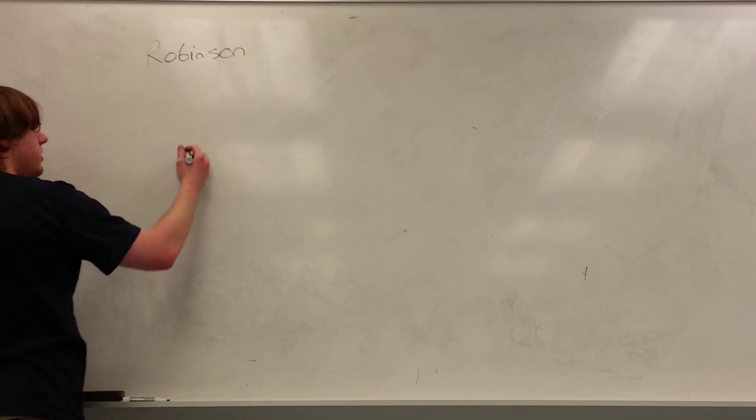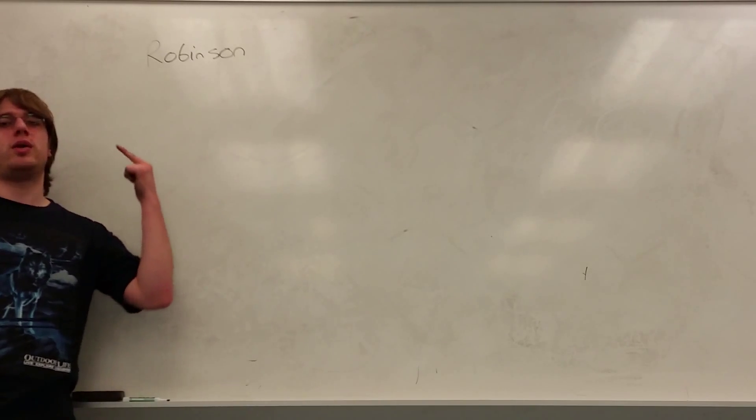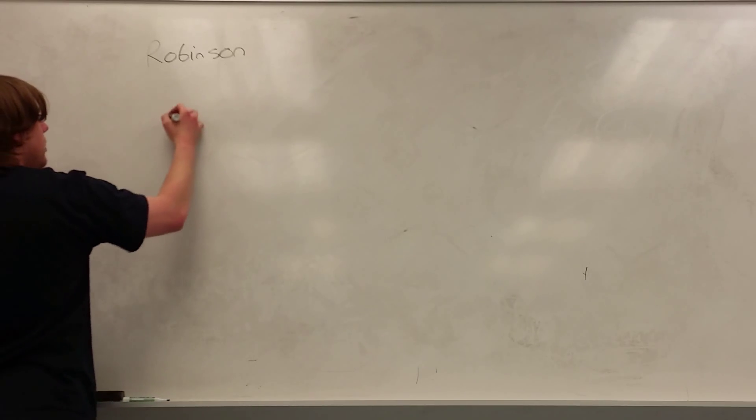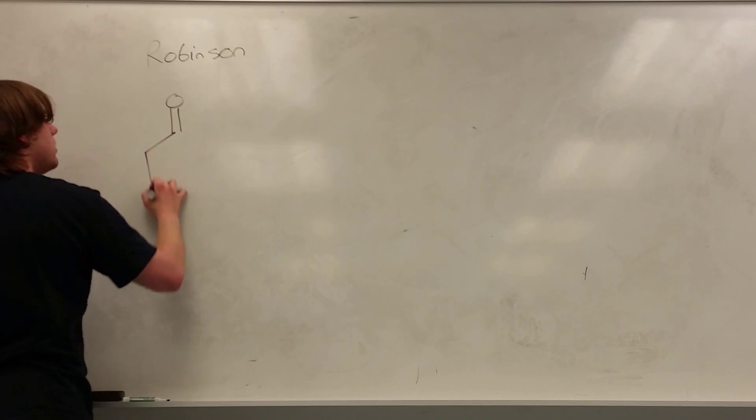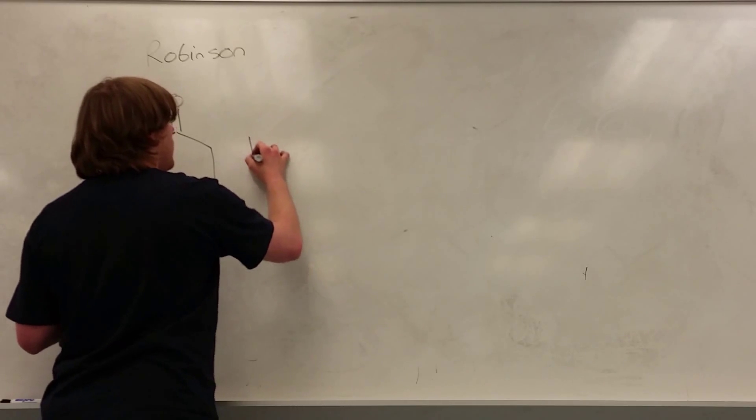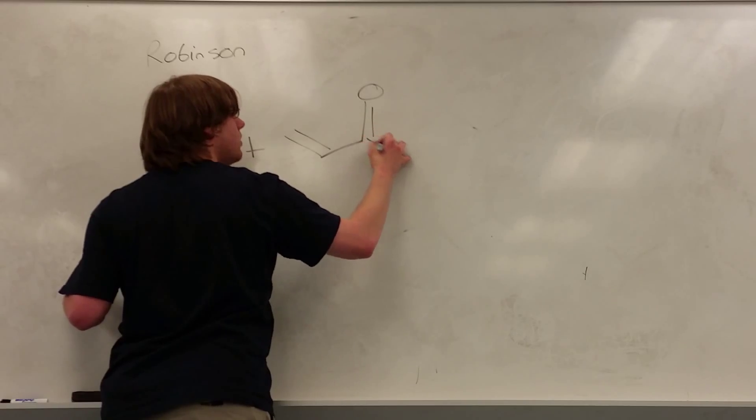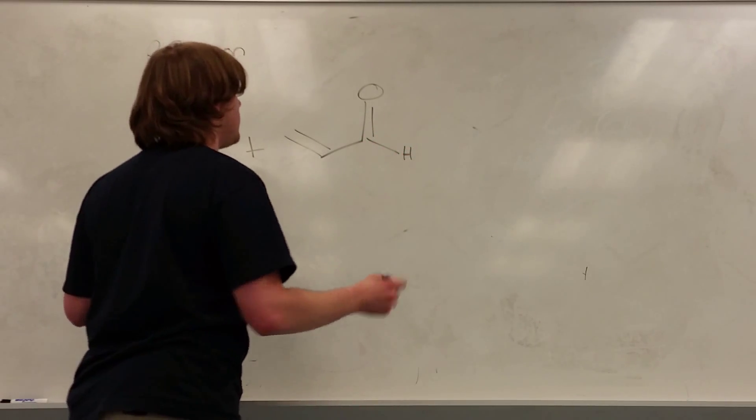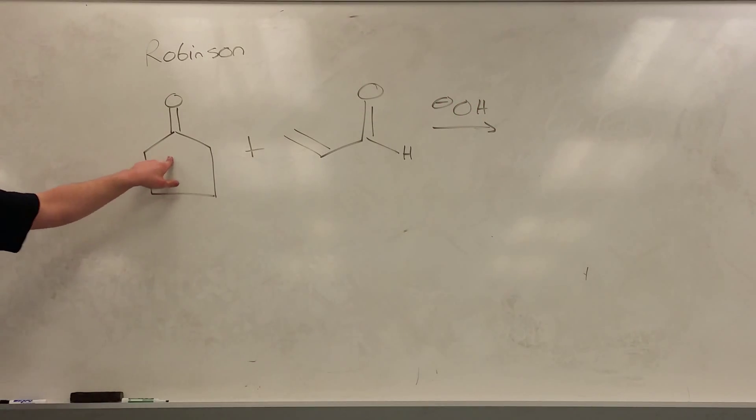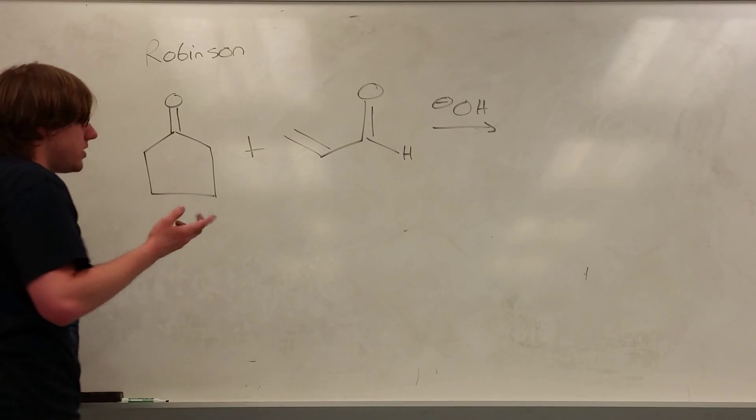The way this works is it involves two separate reactions. One reaction that is a Michael addition, and then following that an aldol condensation. So, let's start with this, and we're going to react that with this, put the hydrogen in there, in the presence of OH-. So, I'm taking a ketone, and I'm reacting it with an alpha-beta unsaturated ketone, or in this case, aldehyde.